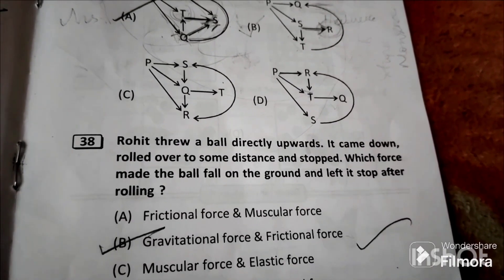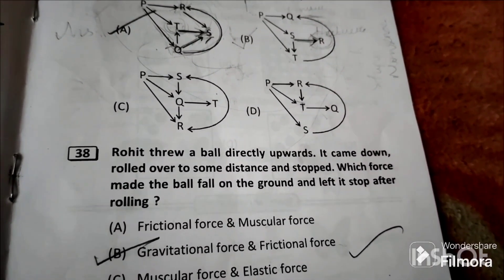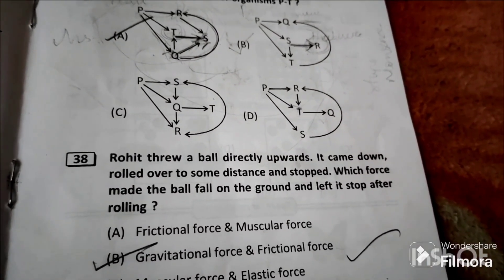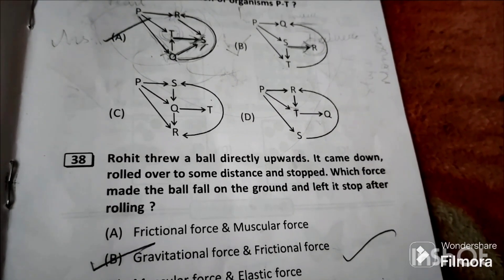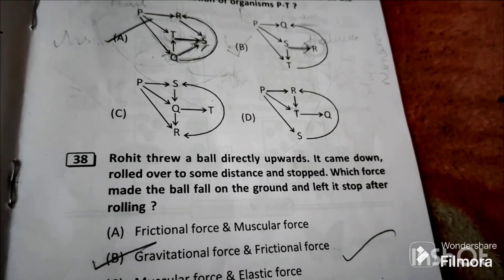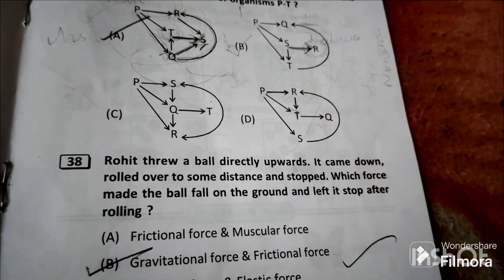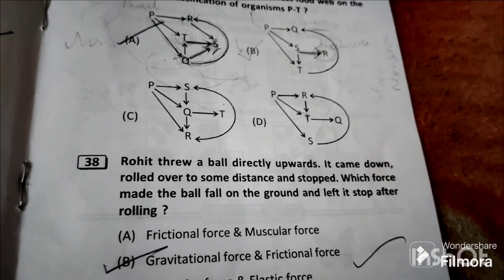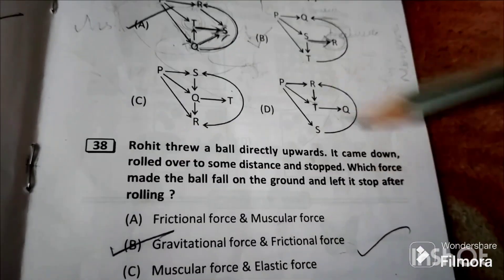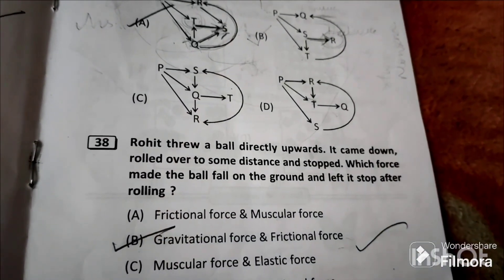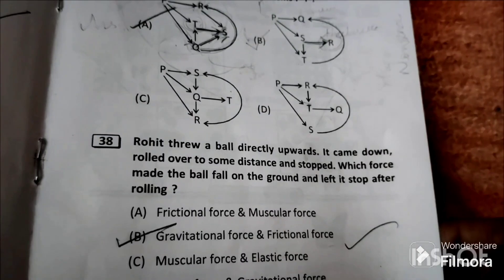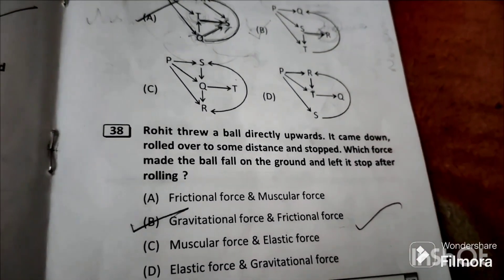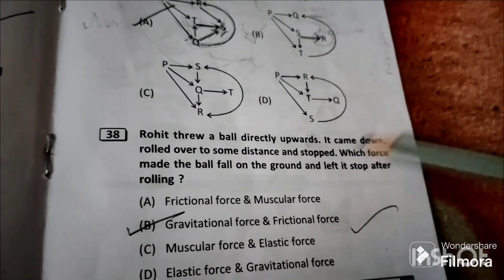Question 38: Rohit threw a ball directly upwards. It came down, rolled over to some distance and stopped. Which force made the ball fall on the ground and left it stopped after rolling? The ball fell down due to gravitational force and it stopped due to frictional force. So option B is the answer: gravitational force and frictional force.